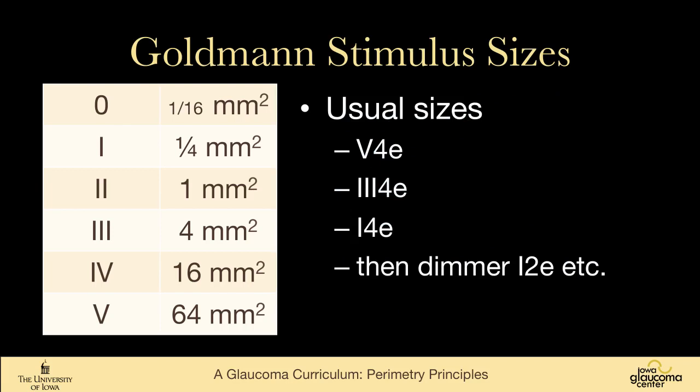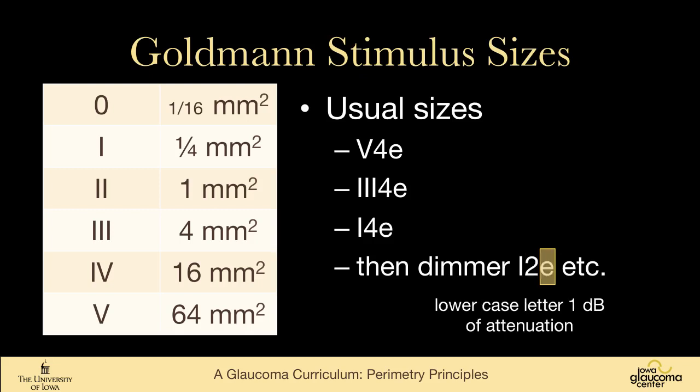So five-four-E is the brightest size-five target. Three-four-E is again the brightest light but a much smaller target. The one-four-E is what we typically use at our institution. If the patient has very good vision, rather than going to the smaller target, we would go to a dimmer light, so one-two-E. The number refers to the brightness in five-decibel steps, and the lower-case letter is a one-decibel step of attenuation.